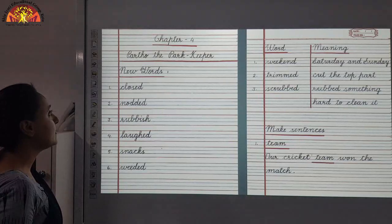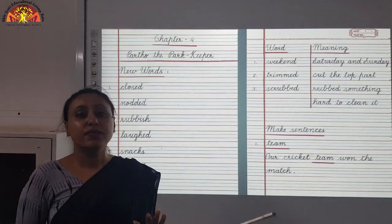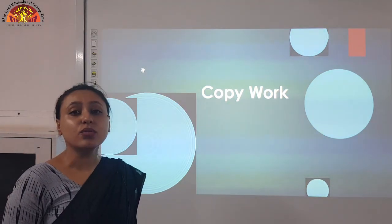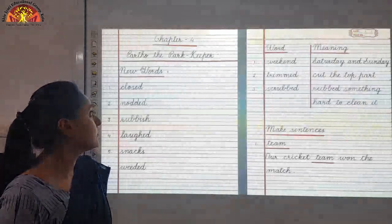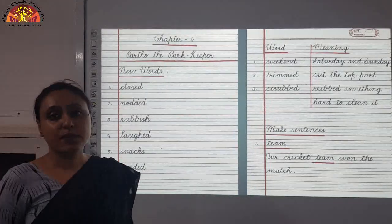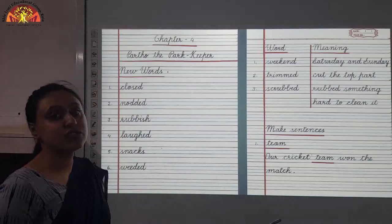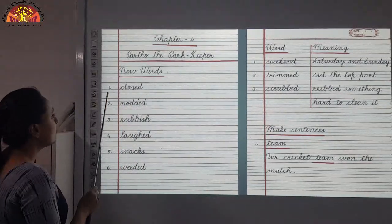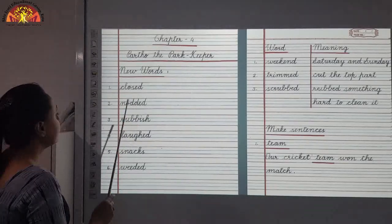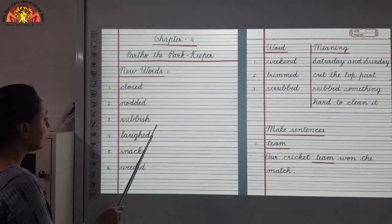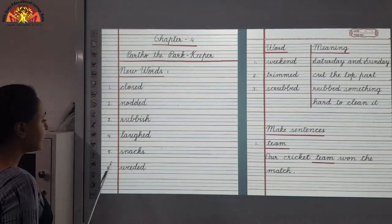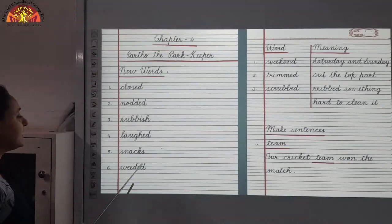Now children, copy work of this chapter. You have to do your copy work very neatly in a beautiful handwriting and draw margins as shown. First, we will do new words. Number 1: C-L-O-S-E-D, closed. Number 2: N-O-D-D-E-D, nodded. Number 3: R-U-B-B-I-S-H, rubbish. Number 4: L-A-U-G-H-E-D, laughed. Number 5: S-N-A-C-K-S, snacks. Number 6: W-E-E-D-E-D, weeded.